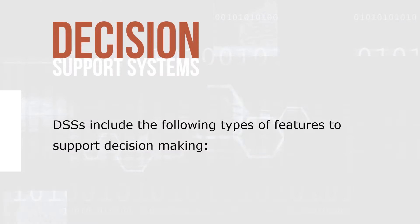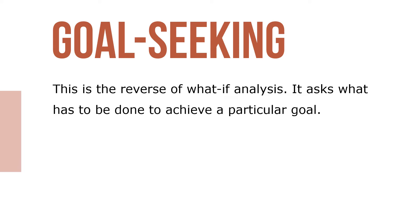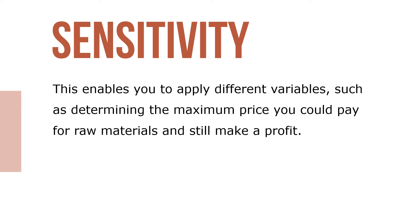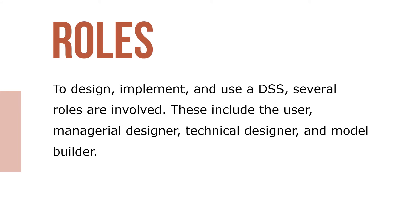DSS includes the following types of features to support decision-making. What-if analysis shows the effect of a change in one variable. Goal-seeking is the reverse of what-if analysis — it asks what has to be done to achieve a particular goal. Sensitivity enables you to apply different variables, such as determining the maximum price you would pay for raw materials and still make a profit. Exception reporting monitors the performance of variables that are outside a defined range, such as pinpointing the region that generated the highest total sales or the production center that went over budget.